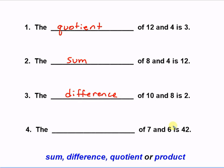Lastly, the blank of 7 and 6 is 42. Well, you can pretty quickly pick up that that's multiplication. 7 times 6 is 42. So we say the product of 7 and 6 is 42.